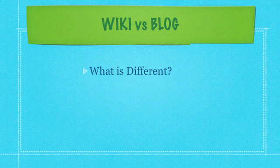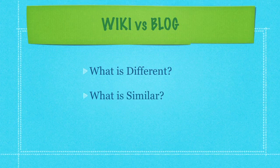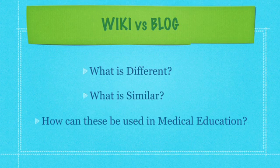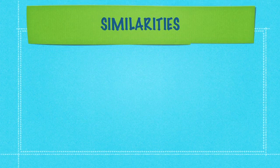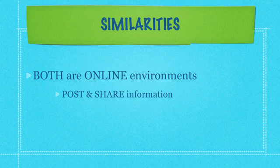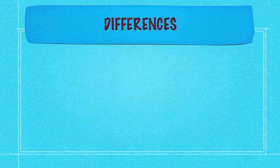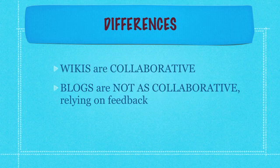To understand what is different about wikis and blogs, you first have to understand what is similar about them, and then you can see how they can be used in medical education. Wikis and blogs are similar in that they are both online environments where students and faculty can post and share information. What is different about them is that wikis are mostly collaborative, while blogs are not as collaborative, relying on feedback to further education.